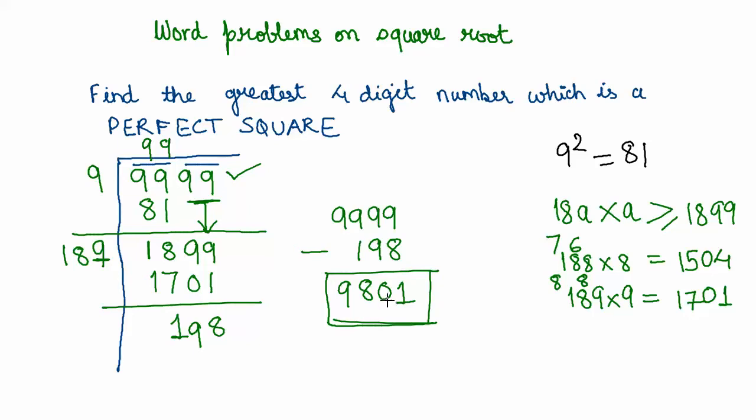So 9801 is actually the biggest or the greatest four-digit number which is a perfect square. You can proceed to find the square root of 9801 and you would get 99 as its square root. That was another interesting word problem on square roots.